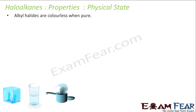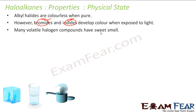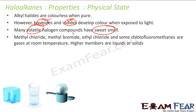All the alkyl halides are colorless when pure. Note: they are colorless when pure, but the bromides and iodides develop color when exposed to light. Most of them are volatile and have a sweet smell. Methyl chloride, methyl bromide, ethyl chloride, and some chlorofluoromethanes are gases at room temperature; higher members are liquids or solids.